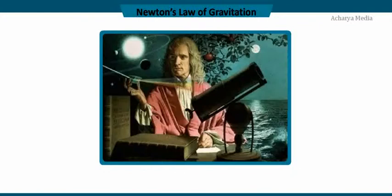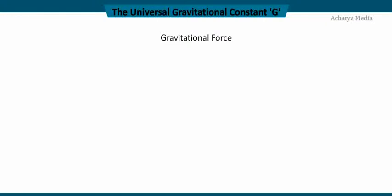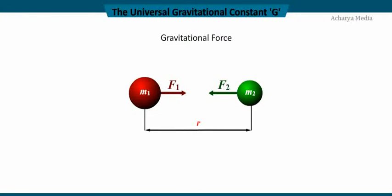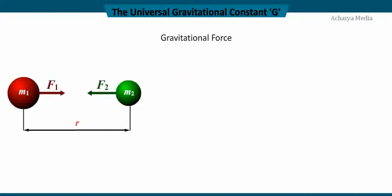Newton's law of gravitation: Newton's idea was that gravity was the universal force acting between any two objects. The universal gravitational constant G — the gravitational force F is the force of attraction between two particles of masses m1 and m2 separated by a distance r. Thus F is directly proportional to m1·m2 divided by r squared. Replacing the proportionality sign, F equals G·m1·m2 divided by r squared, where G is the universal gravitational constant. Rearranging, G equals F·r squared divided by m1·m2, which is the gravitational force of attraction exerted between objects of unit masses separated by unit distance.